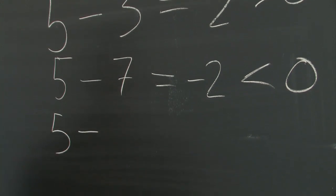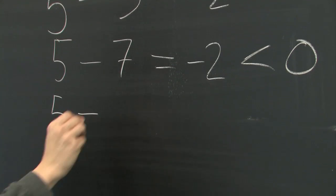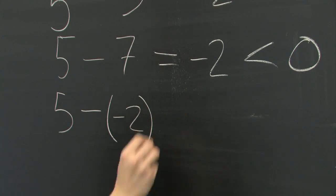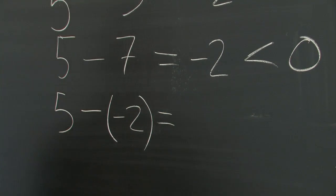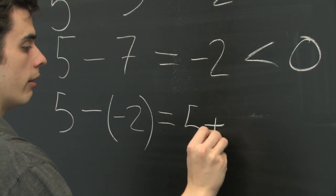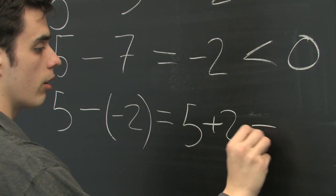If we subtract a negative quantity, for example, 5 minus negative 2, that's the same thing as adding a positive quantity, 5 plus 2, which is equal to 7.